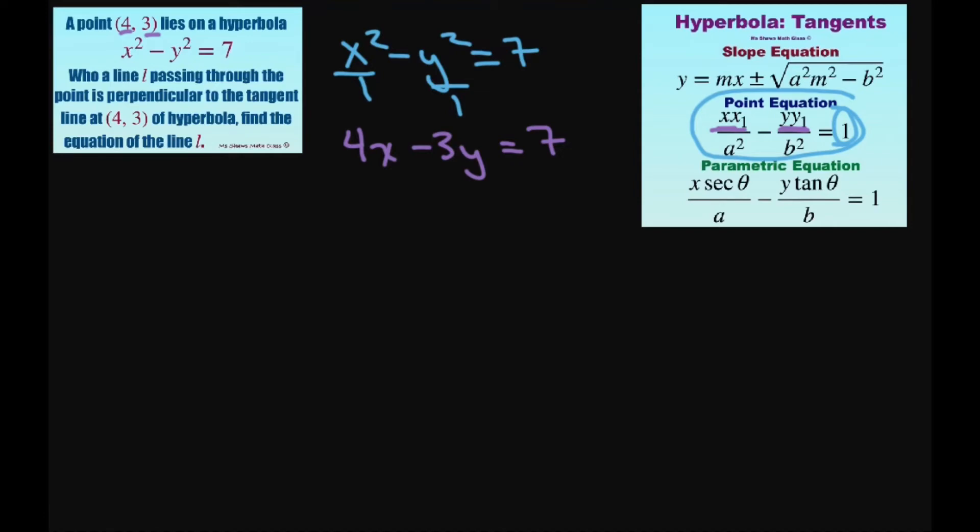Alright, since we have that, we can rewrite this as a slope intercept form. That gives me the equation of y equals 4 thirds x minus 7 divided by 3.